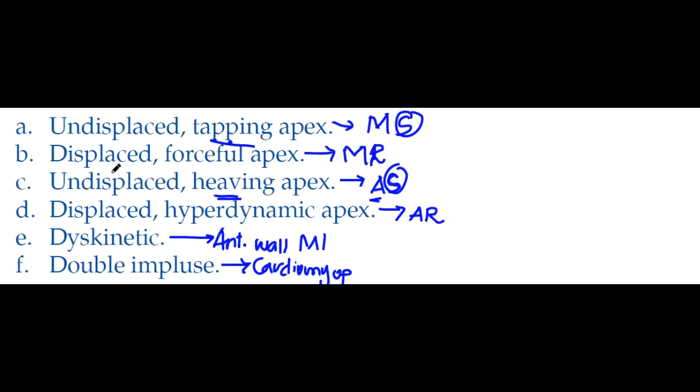One thing: mitral stenosis—tapping apex beat; aortic stenosis—heaving apex beat; aortic regurgitation—hyperdynamic apex beat; mitral regurgitation—forceful apex beat. Thank you for watching.